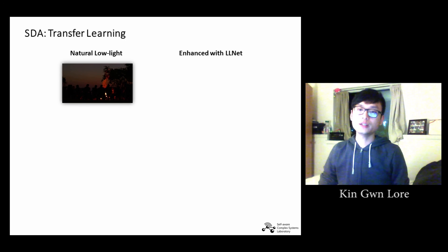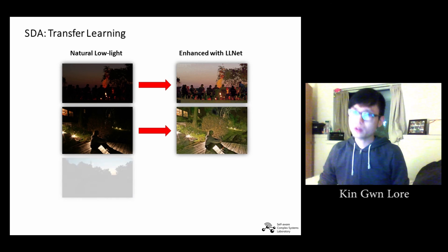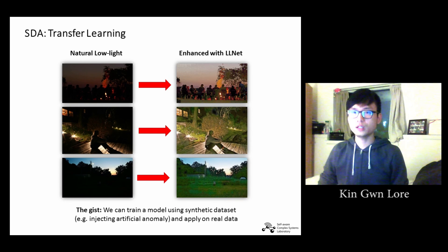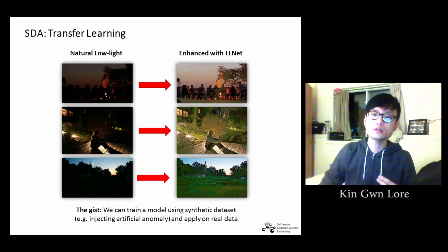Because natural low-light training data is limited, we train the model using synthetically darkened and noise-added images. To demonstrate the notion of transfer learning, we train the model with synthetic images but applied it on natural low-light images. Here's what we got from our algorithm, which actually looks pretty good. Especially for this picture of grasses and trees right here in the third row. The gist that we would like to emphasize, and it may be relevant to other domains, is that we can train a model using synthetic data set by injecting artificial anomaly, for example, and then apply it on real data to solve the problems we are interested in.